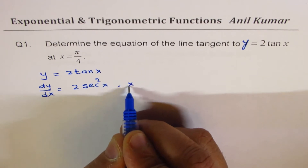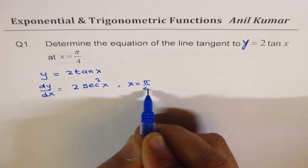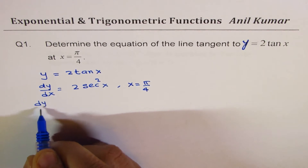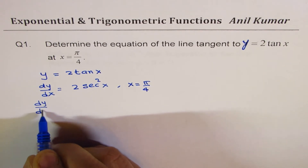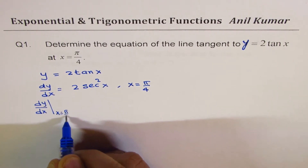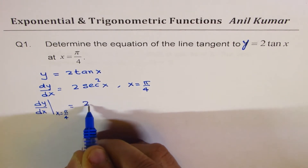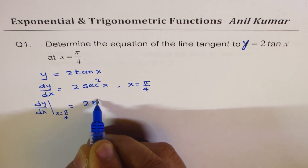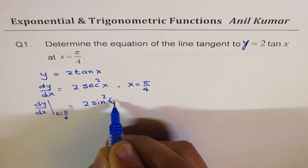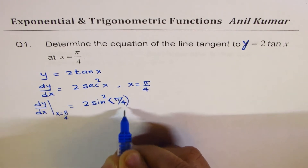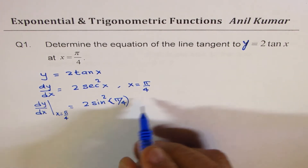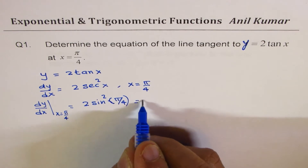Since we are interested at x equals pi by 4, we find the derivative dy/dx at x equals pi by 4. Substituting pi by 4, we get 2 secant squared pi by 4. Since secant of pi by 4 squared gives us 2, the derivative evaluates to 2.